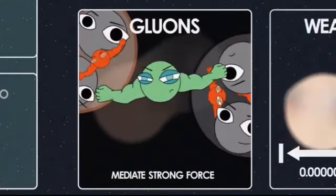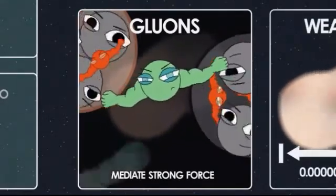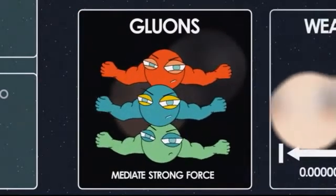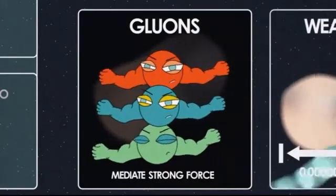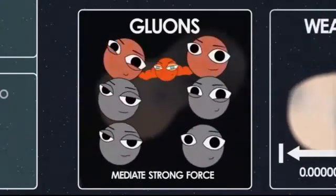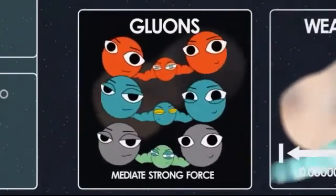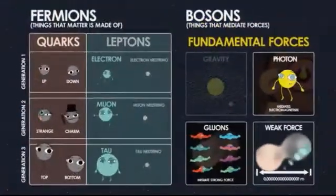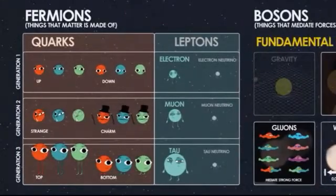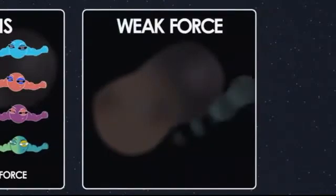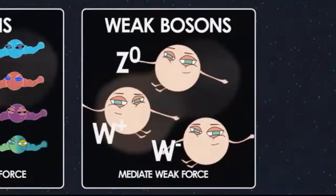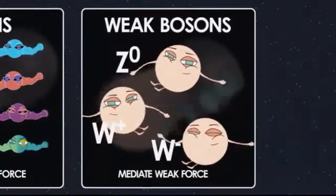The strong force has a property called color, with three colors: red, blue, and green. Because of this, there are actually eight of these gluon particles carrying the force. There are red up quarks, blue up quarks, and green up quarks — and the same for every other kind of quark, so there are not six quarks but 18. As for the weak nuclear force, it's carried by three particles: the Z-naught and the W-plus and W-minus.